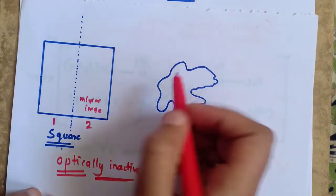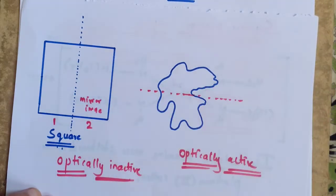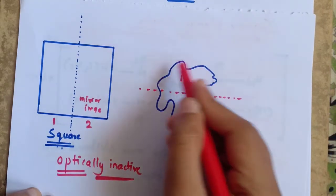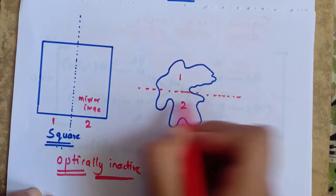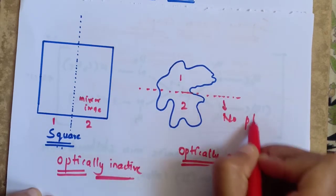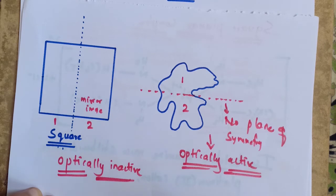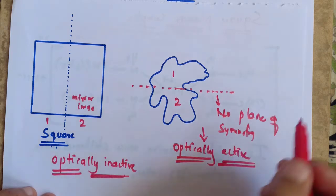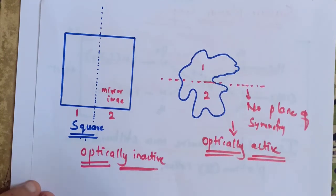Now consider the second structure. Here you can draw the imaginary plane that cuts the molecule into two halves. This is one half and this is the second one. You can observe that this first image is not the mirror image of the second one. So it is not having any plane of symmetry. So it is said to be optically active. Such complexes which do not have a plane of symmetry are said to be optically active. Such complexes which have a plane of symmetry are said to be optically inactive.